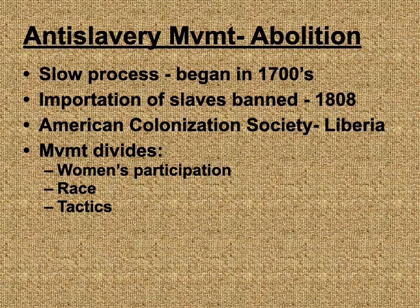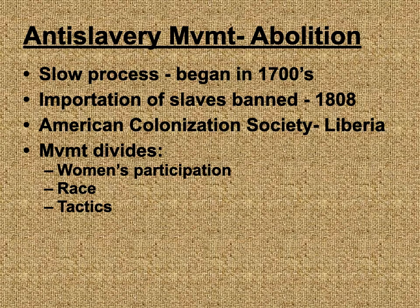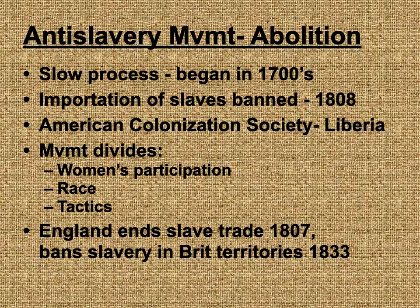We have divisions over women's participation, race, and tactics. One of the reasons abolition was so slow to take effect is because many people had different ideas on how it should happen. Some believed slave owners should be paid for their slaves, some believed the United States should just abolish slavery outright, and some advocated for what they called gradual emancipation — where slowly over time slave owners would give up their slaves in exchange for agricultural or industrialized equipment.